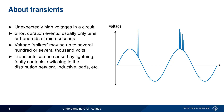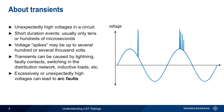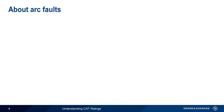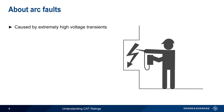Although very high voltages are dangerous in and of themselves, transients can also lead to an even more dangerous condition, namely arc faults. Arc faults, also called arc flashes or arc blasts, can be caused by extremely high voltage transients, and the higher the voltages, the greater the risk of an arc fault.